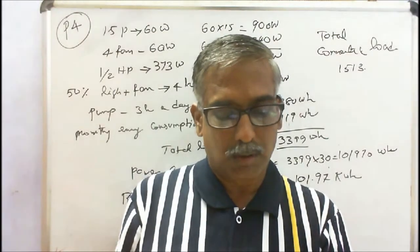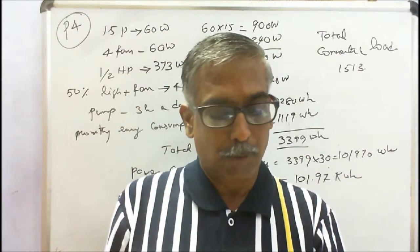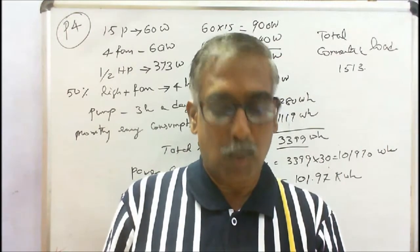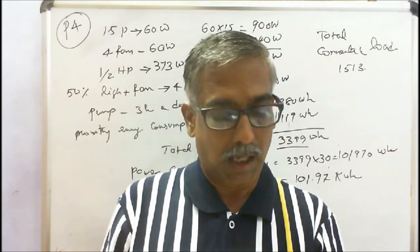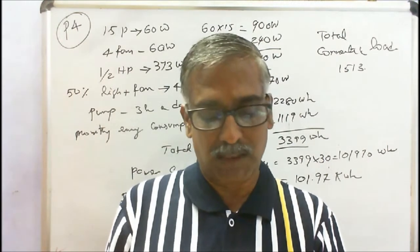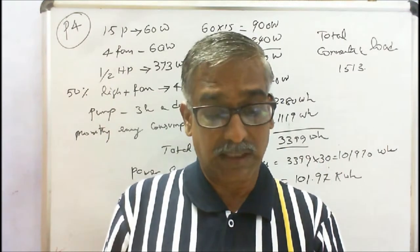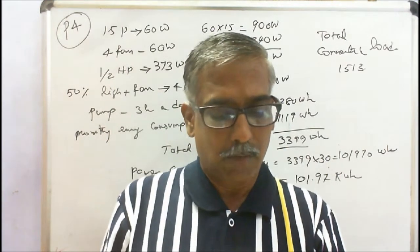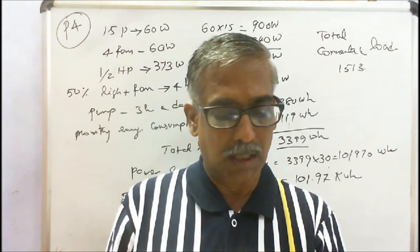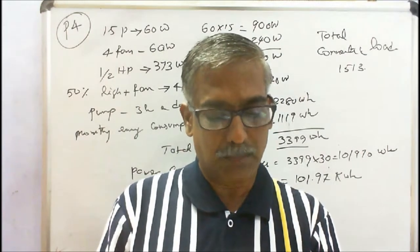Problem 4: A house consists of 15 light points of 60 watt each, 4 fans of 60 watt capacity, and a pump motor of 0.5 HP. Assuming that 50% of light and fans are used for 4 hours per day and the water pump works for 3 hours daily, find out the monthly consumption cost of electricity bill based on tariff Rs. 2.25 per kilowatt-hour.